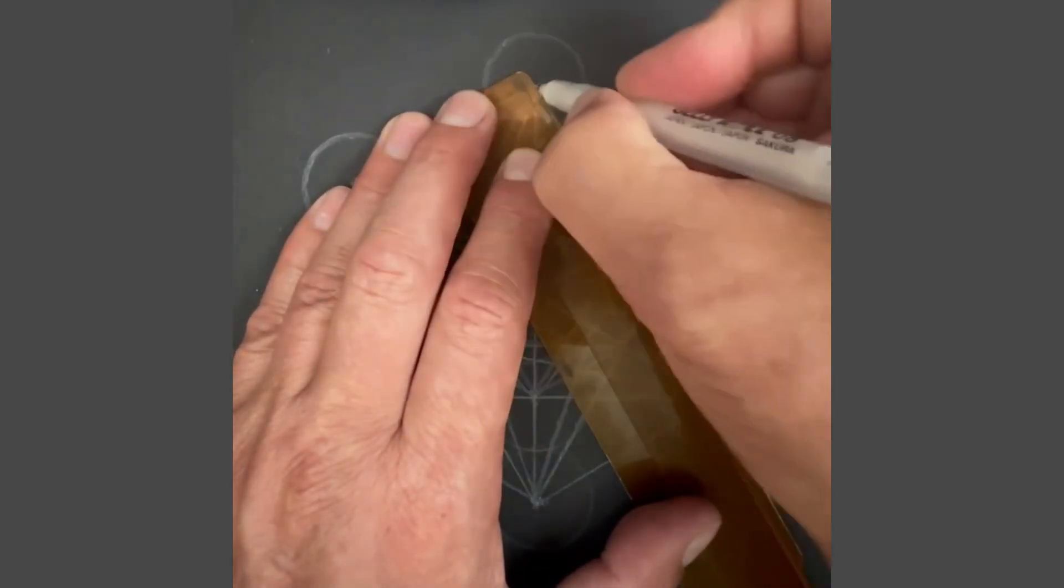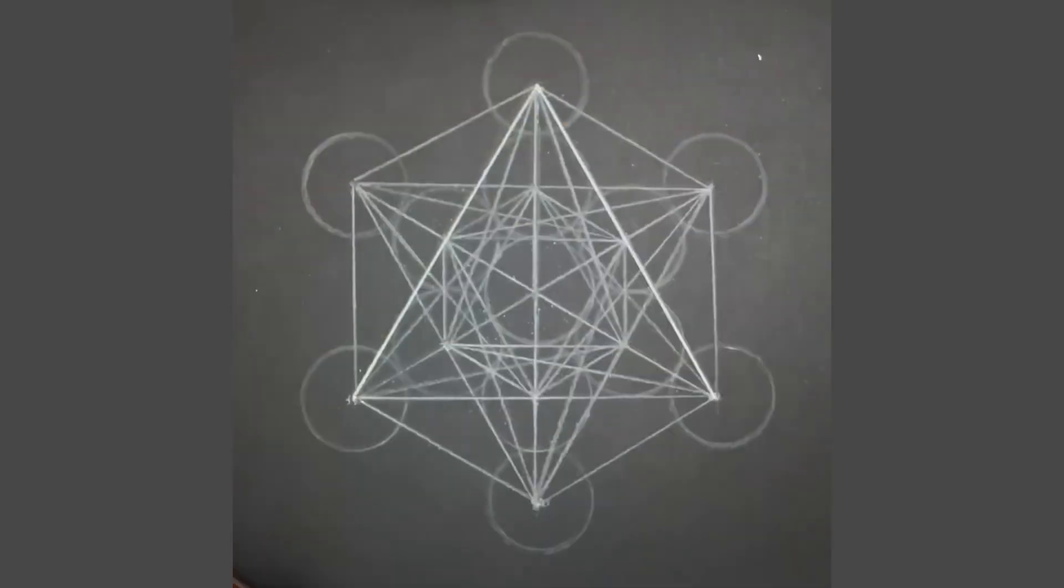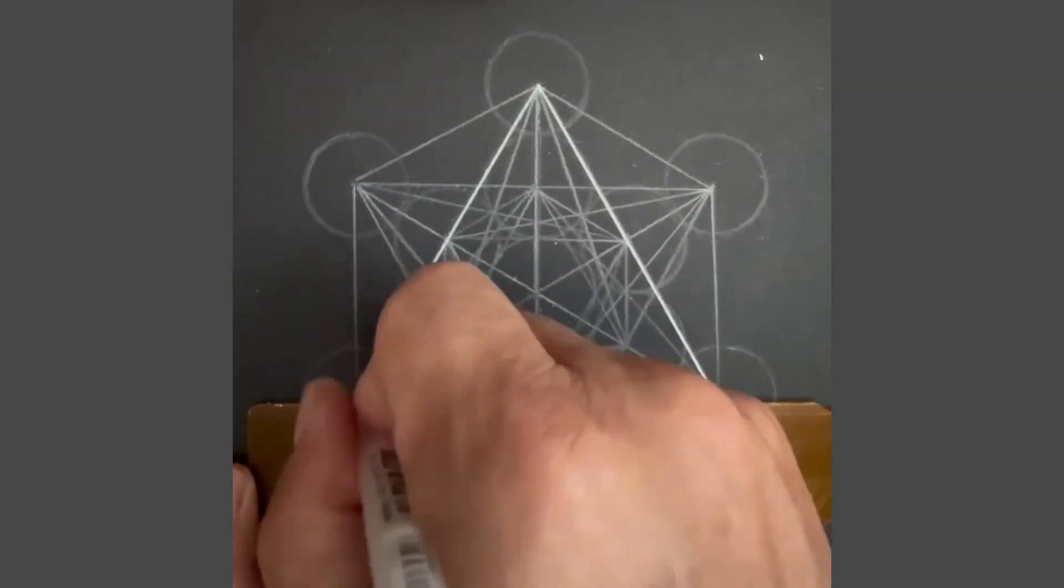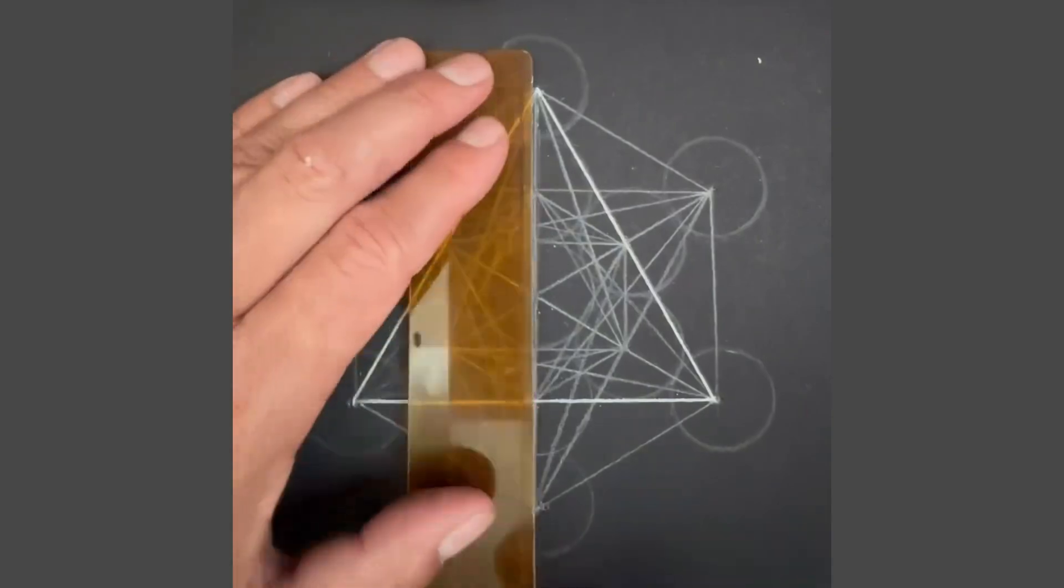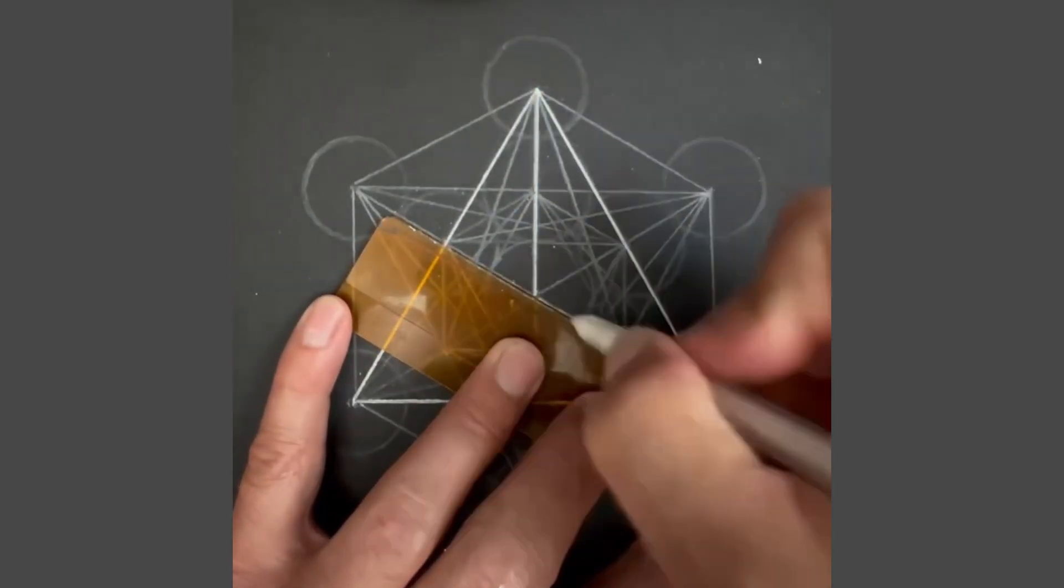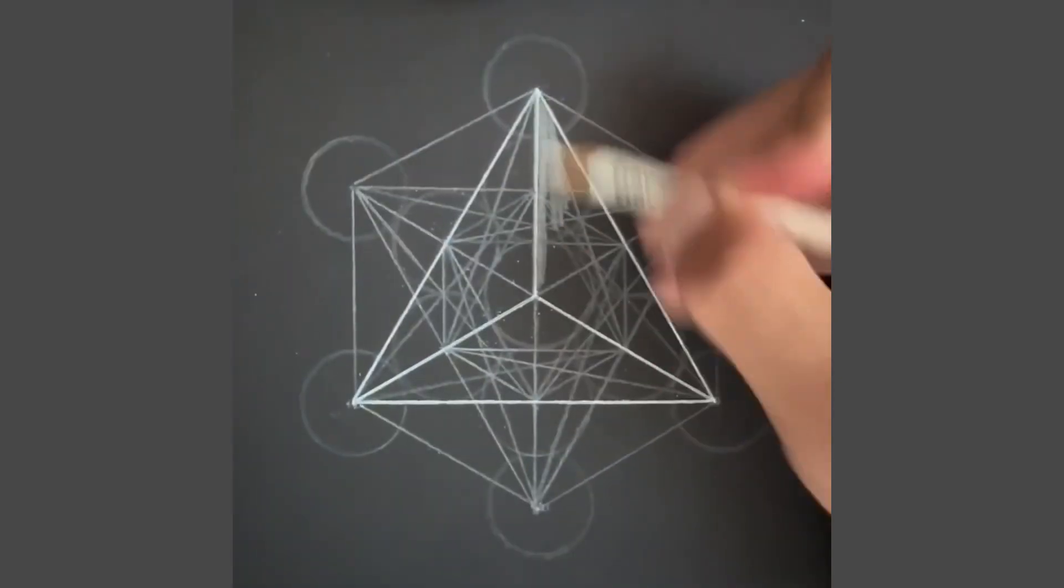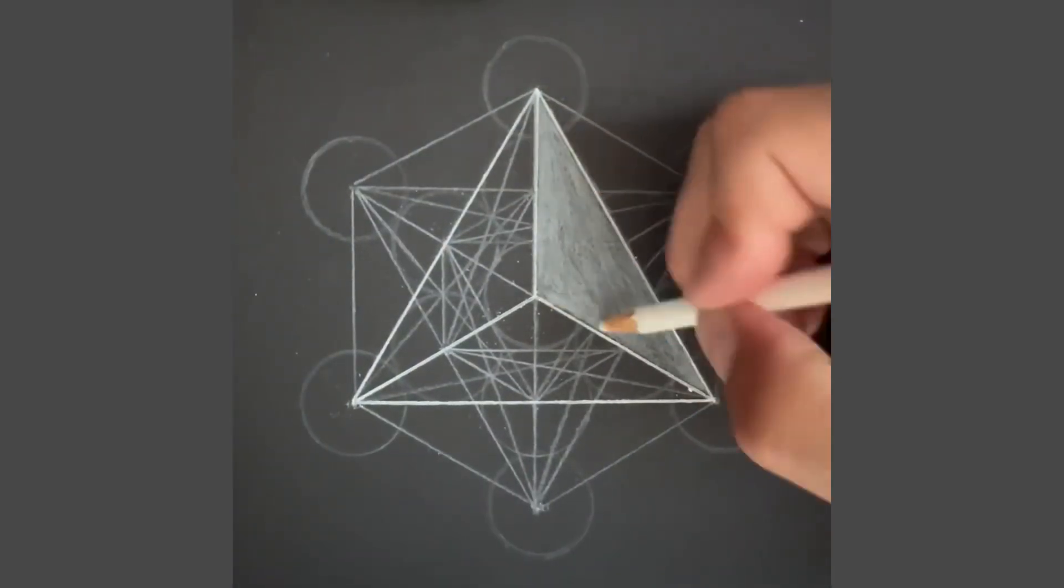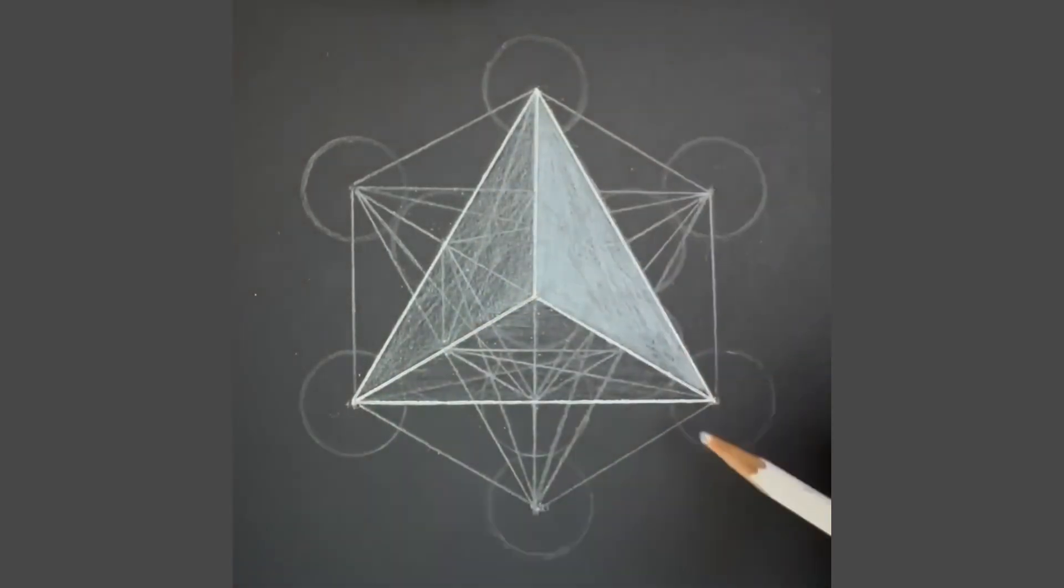Then using a pen, define the edges of the central triangle. This will form the basis of your tetrahedron. Once you have this, you will then need to connect the lines to the center point from each corner of the triangle, imagining this is a three-dimensional four-sided pyramid. Once you've done that, add tone to create the effect.